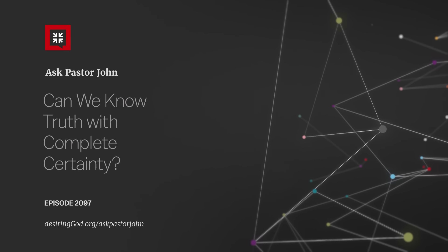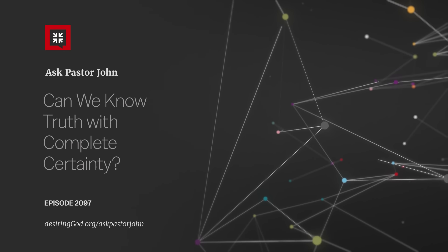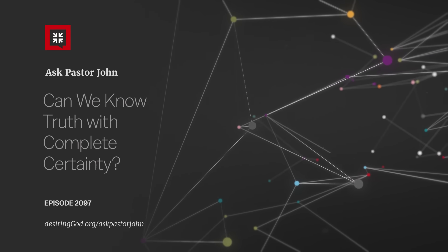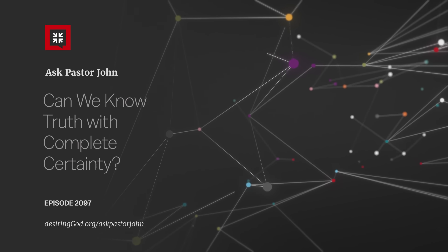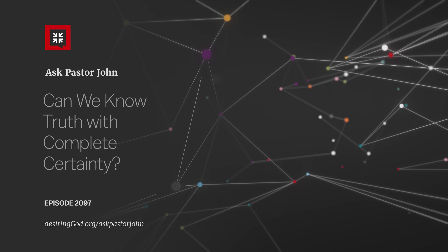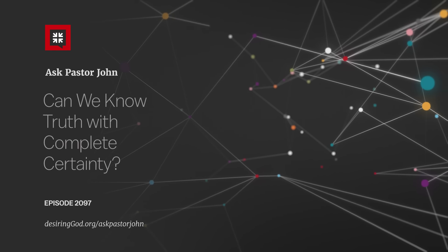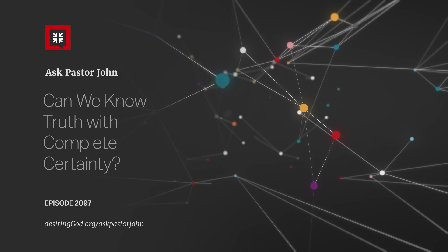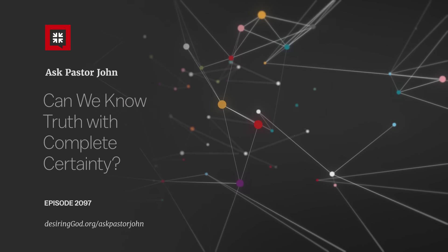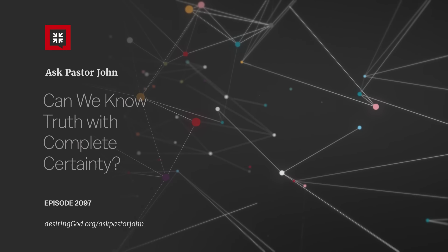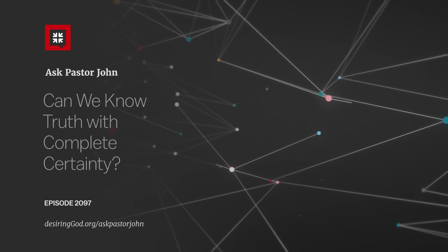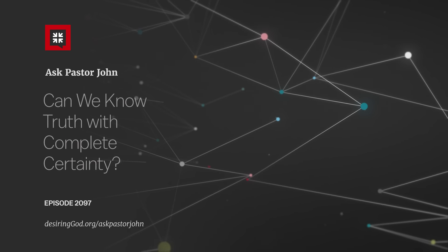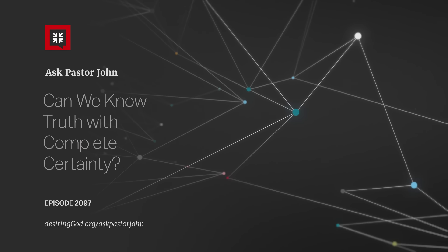When Paul was trying to awaken faith, he gave arguments and reasons and evidences. And when he was arguing for the resurrection, he said, then Jesus appeared to more than 500 brothers at one time, most of whom are still alive. Meaning, you can go talk to them and increase your sense of evidential confidence by looking at evidences.